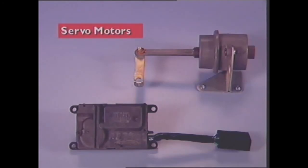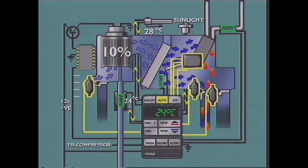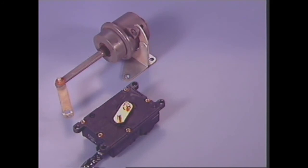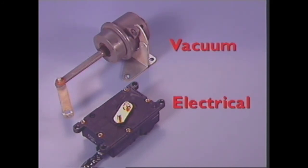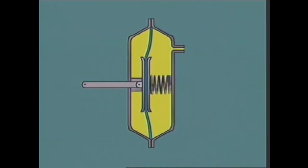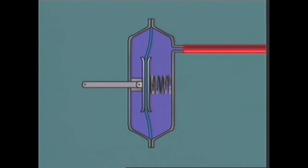This section examines servo motors for automatic climate control air conditioning systems. Servo motors are used to control flaps and valves in the heater and air conditioning systems; by repositioning the flaps and valves, output temperatures can be adjusted to the temperature desired by the occupants. Servos can be one of two types: vacuum servos and electrical servos. Vacuum servos consist of a sealed housing divided by a flexible diaphragm that seals the housing into two separate chambers — one open to atmosphere, the other sealed with a fitting for a vacuum hose connection.